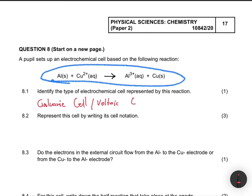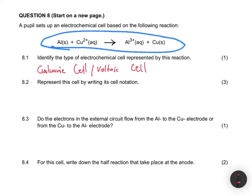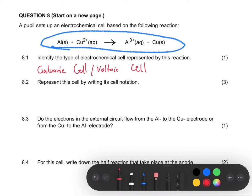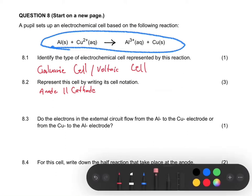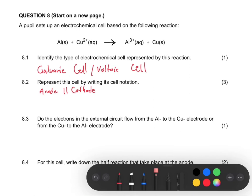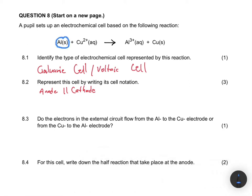Question 8.2 asks us to represent this cell by writing its cell notation. The standard formula for a galvanic cell notation is: anode, salt bridge, and cathode. Now let's identify the anode and cathode. At the anode, oxidation happens — we lose electrons. Aluminium is losing electrons and becoming Al³⁺. At the cathode, reduction happens — gaining of electrons. Copper 2+ is gaining electrons and becoming copper.